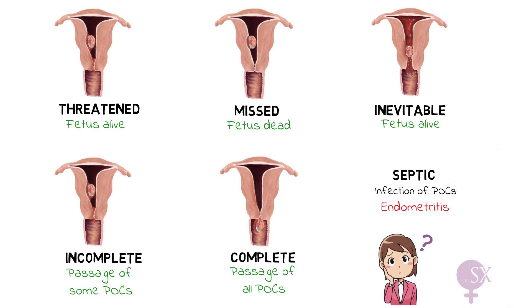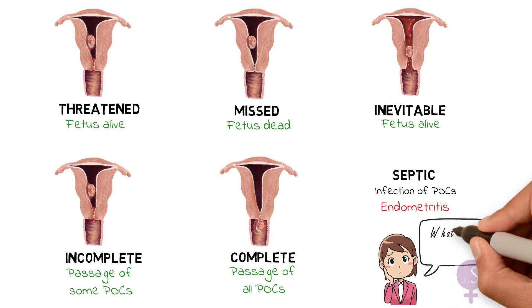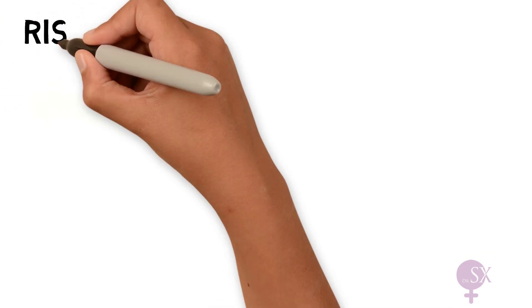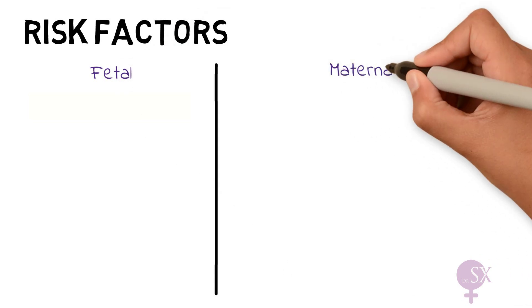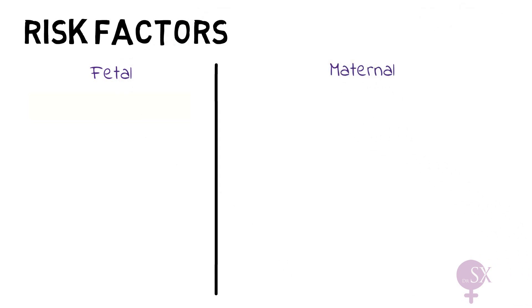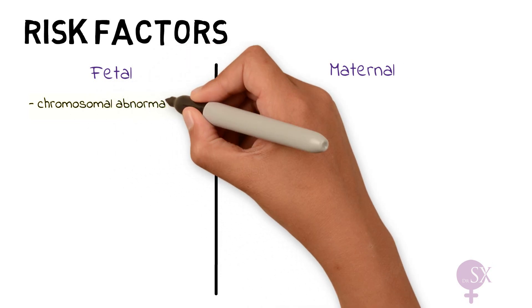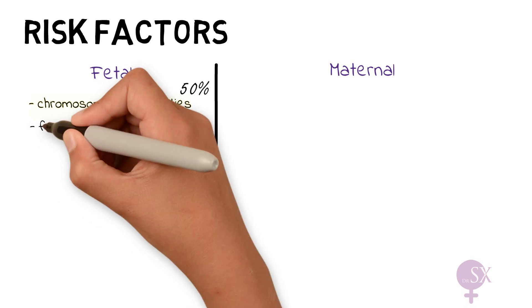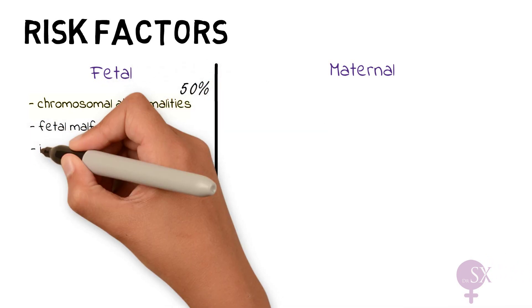A lot of these patients ask what they did wrong. Many patients feel guilty and think this is a result of something they might have done. It is important to reassure them, explain that miscarriages are very common, and also explain the possible causes. This leads us to the risk factors for having a miscarriage, which we can divide into fetal and maternal risk factors. The most common cause is fetal chromosomal abnormalities, which cause 50% of miscarriages. Others include fetal malformations and infections.